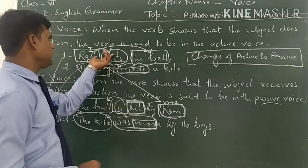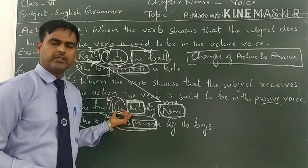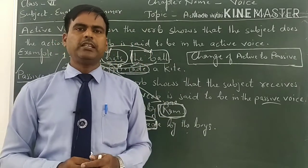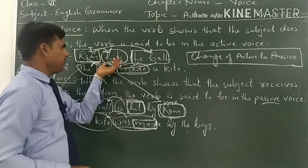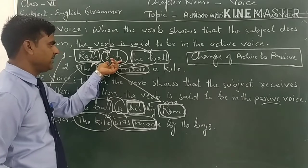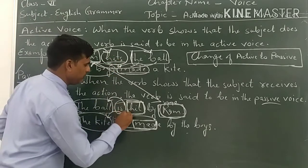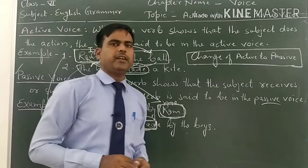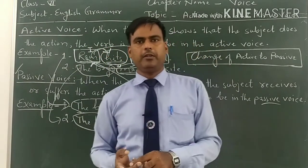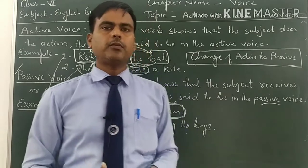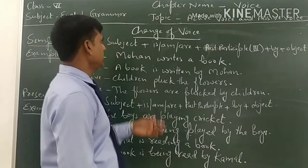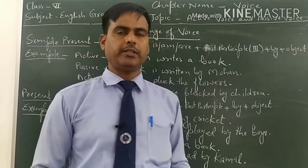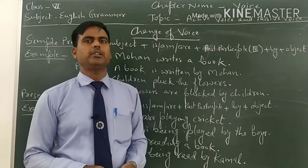The tenses never change when we change from active voice to passive voice, but there may be a little bit of change in the helping verb. For example, in simple present tense we use is/am/are as helping verb with the third form of the main verb. In passive voice, we always use a helping verb and the main verb must be in its third form or past participial form.